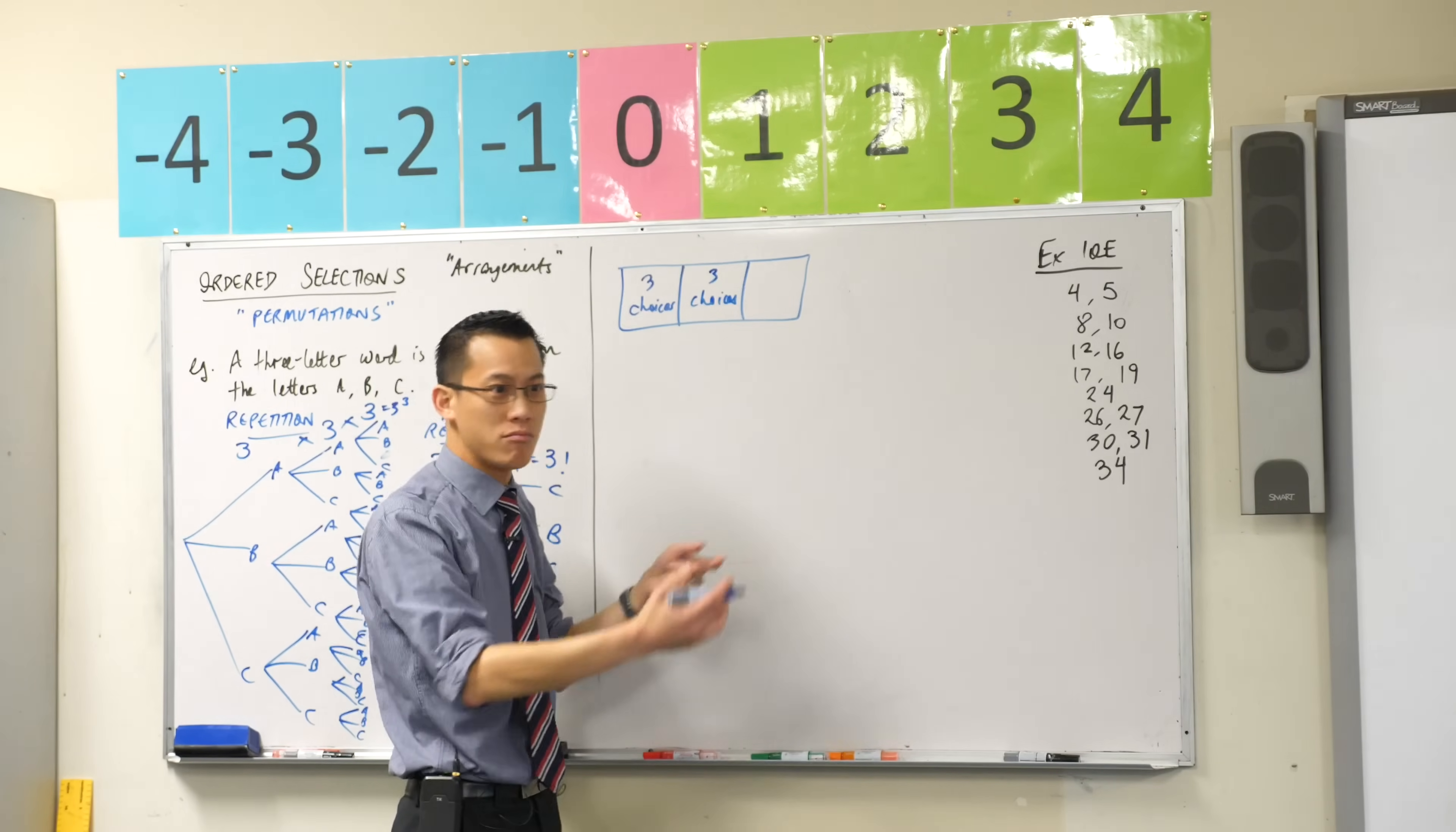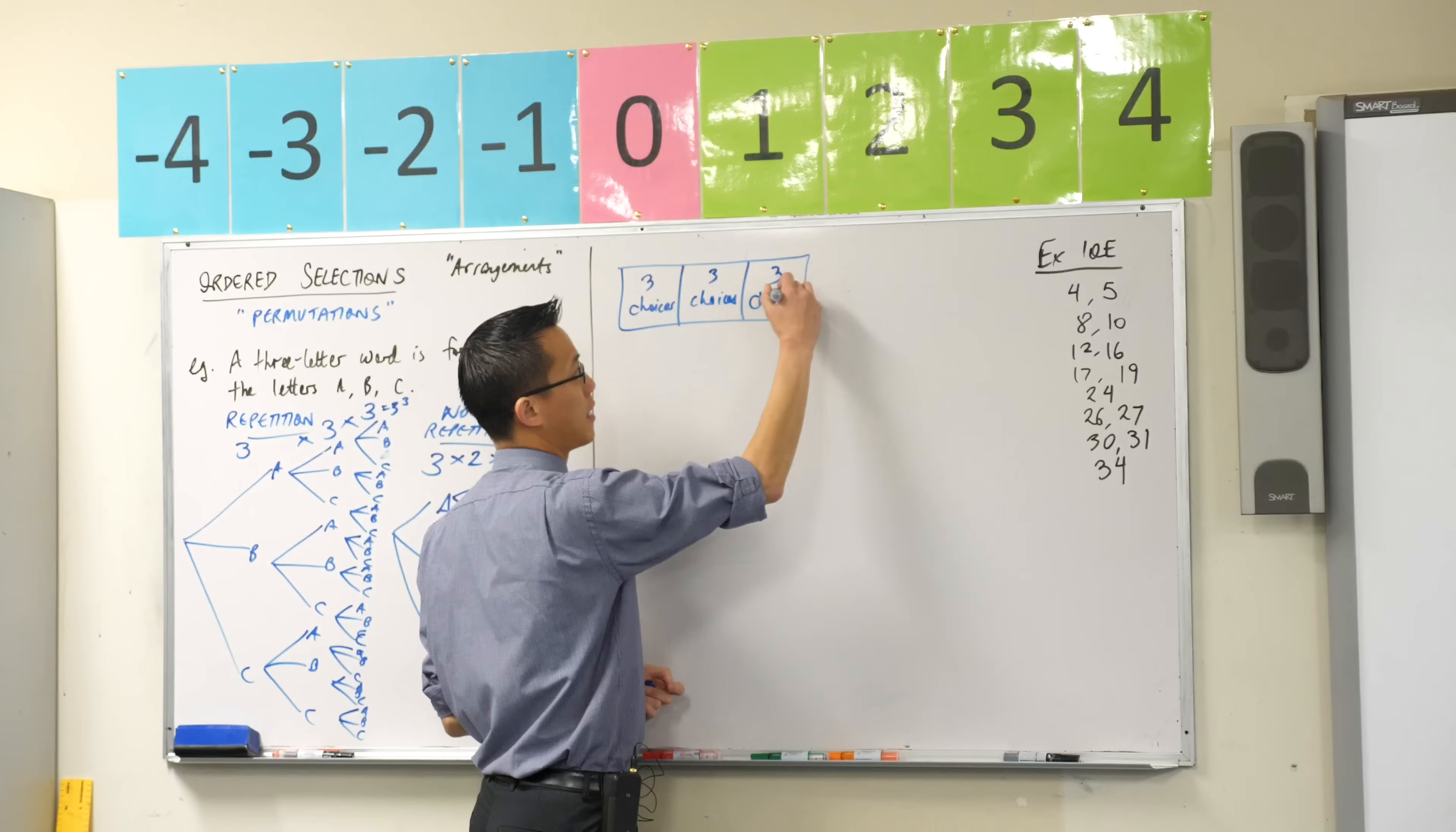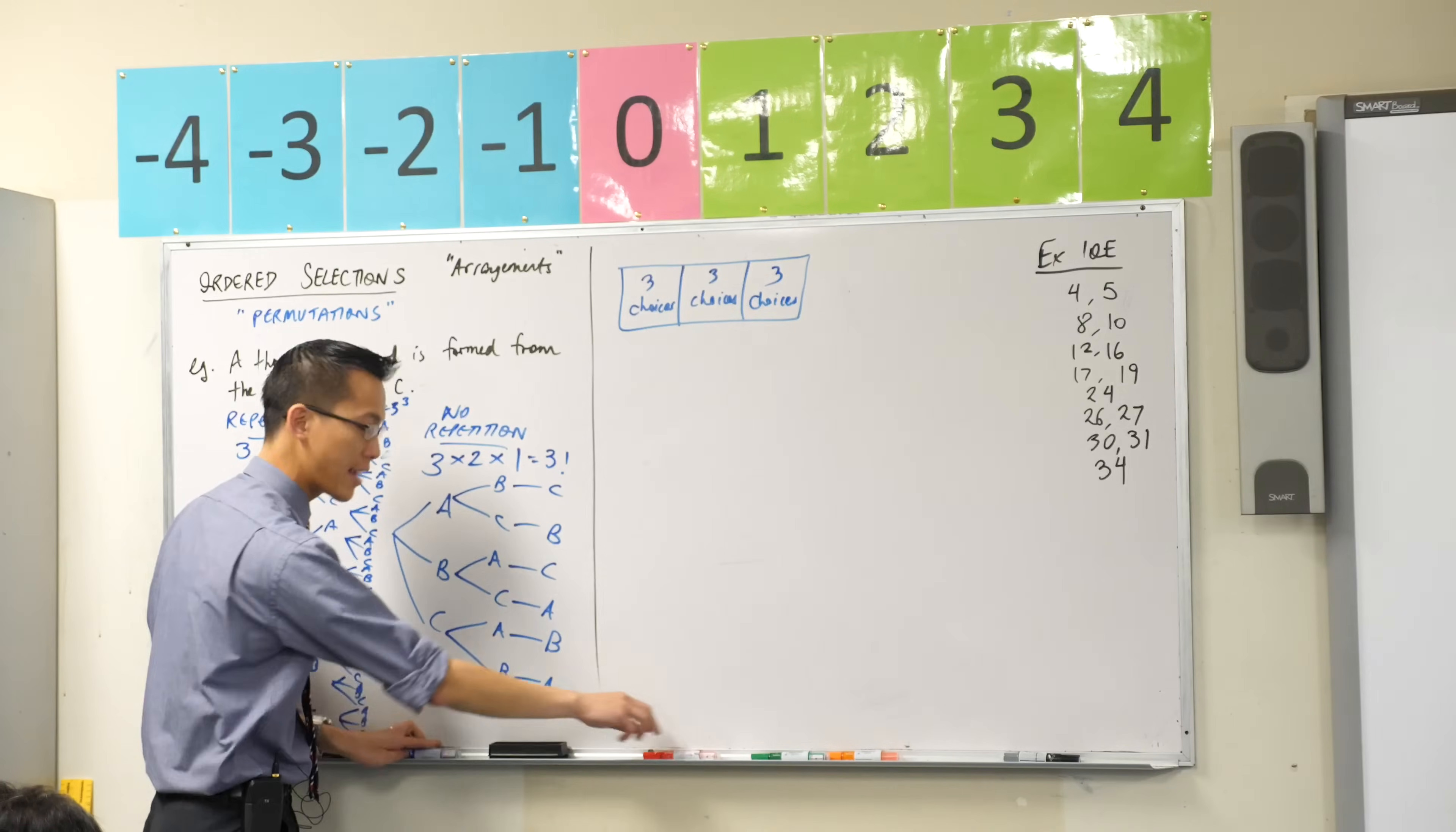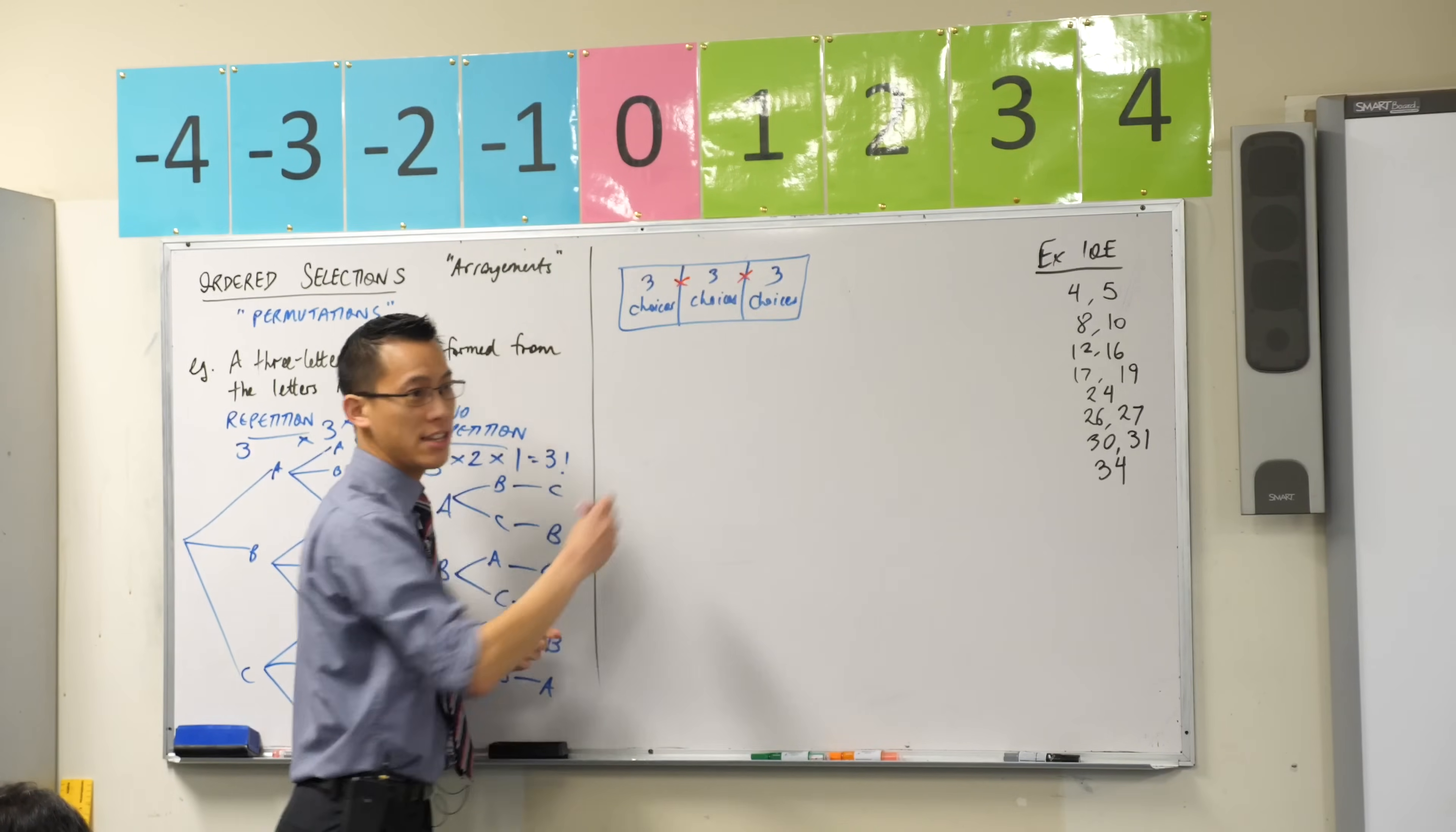And then the last time, nothing has changed, I've still allowed repetition, so I'm getting three choices. Now to combine all of these together, what am I going to do? I am going to multiply each step.